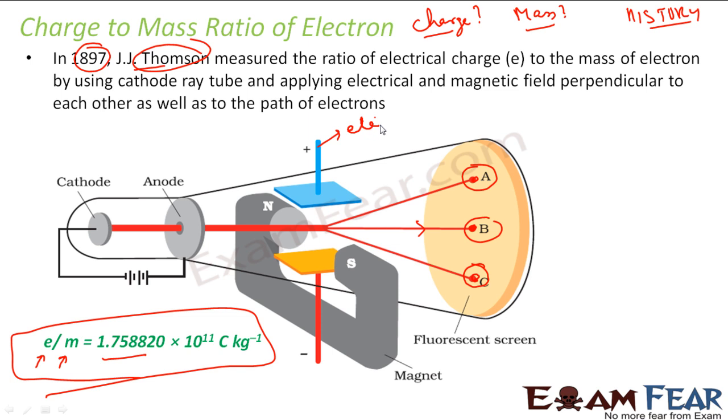You see, this is electric field and this is magnetic field, right? He applied both electric and magnetic field and he balanced in such a way that both cancel each other and the electron hit the point B. And then with that calculation, he found e by m ratio.